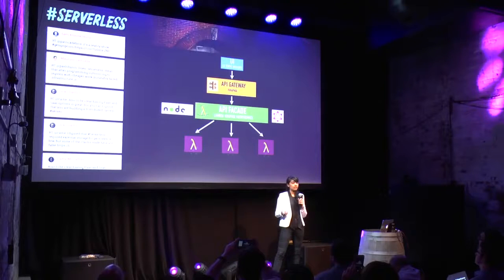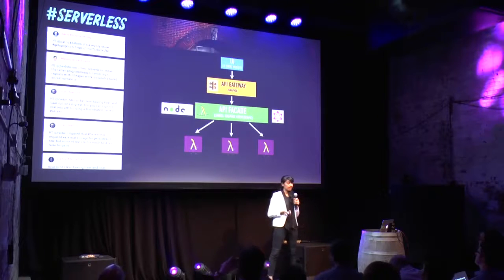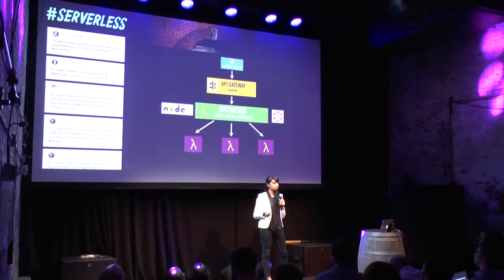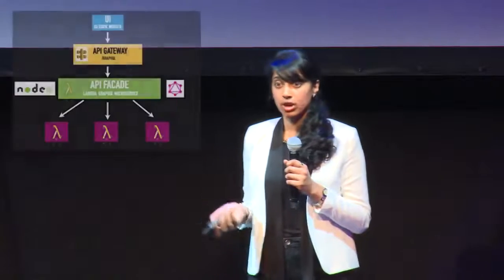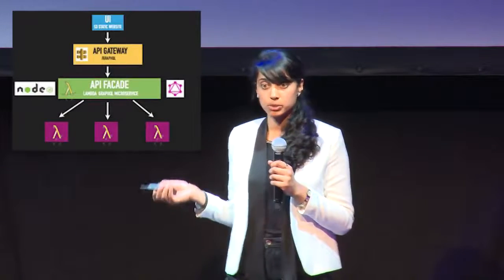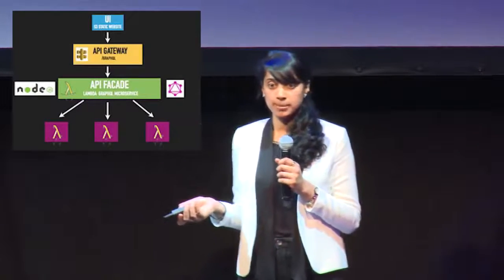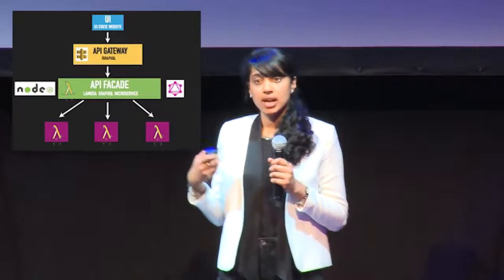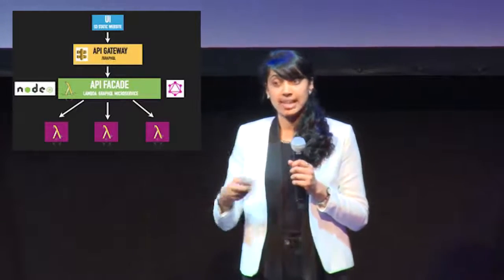Taking a closer look at the architecture, there's a UI which is a static website on S3. This makes calls to a single endpoint on the API Gateway, which is GraphQL, which then triggers the GraphQL server Lambda function, for which we've chosen the JavaScript implementation and Node.js. The GraphQL server acts as an API facade, so it delegates the data fetching to multiple other microservices, which are each deployed as separate Lambda functions.